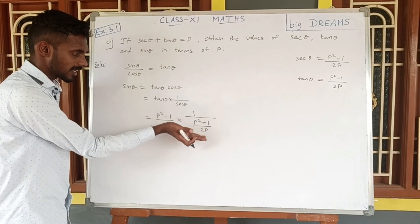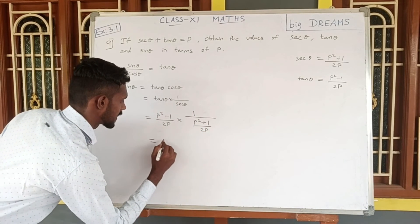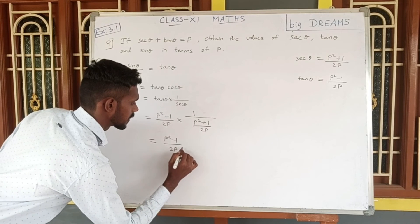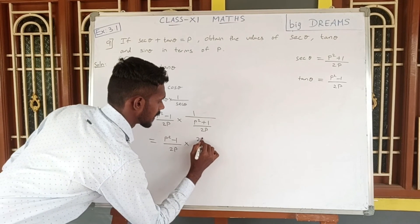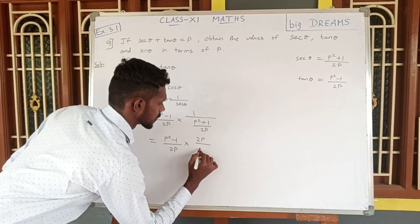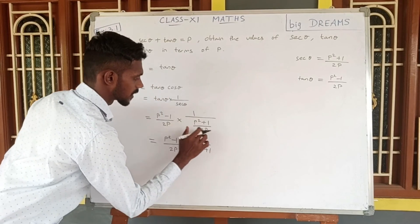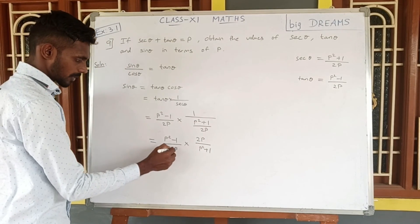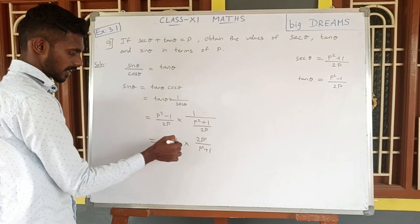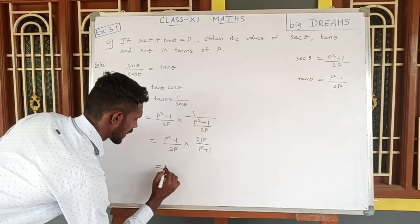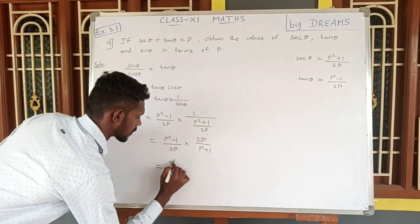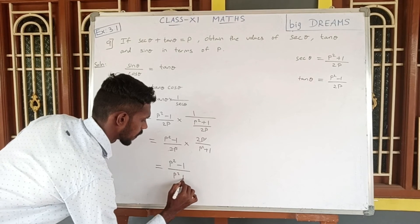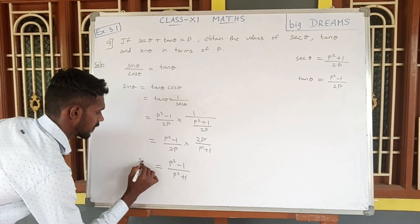Flipping the reciprocal — just swap numerator and denominator — so sin theta equals P squared minus 1 by 2P, multiplied by 2P by P squared plus 1.